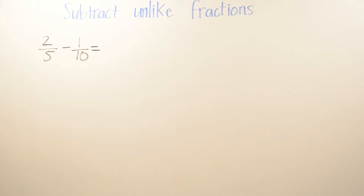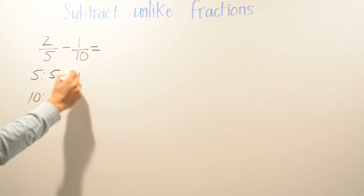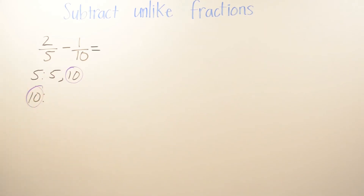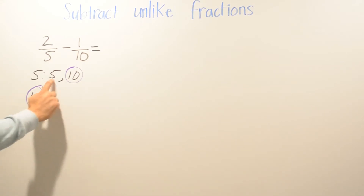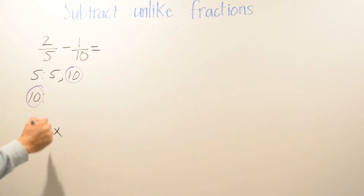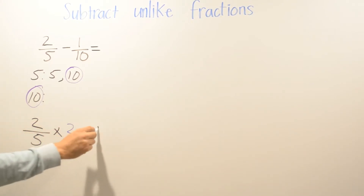I'm going to start with 5 and 10. We go 5, 10 — I'm going to stop there because I see that 10 is the same as the denominator. Now I'm going to see how many times I multiplied 5 to get 10: one, two. So we're going to take the fraction 2/5 times 2, because I multiply by 2 to get 5 times 2 is 10.